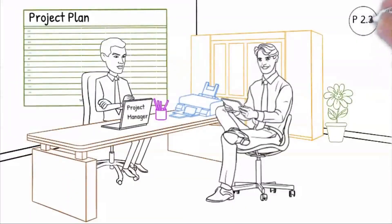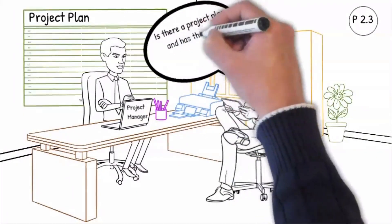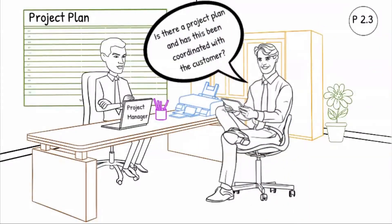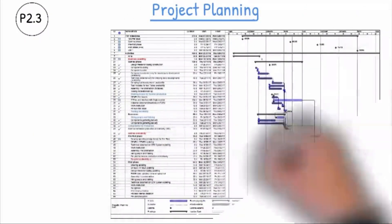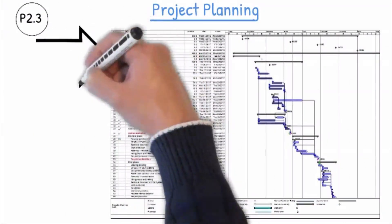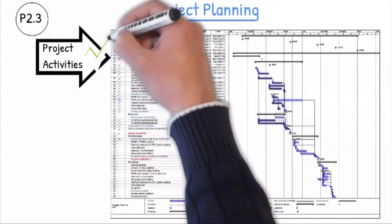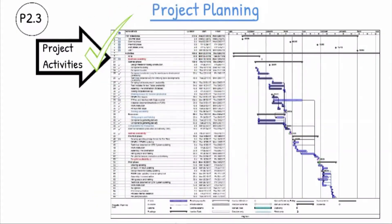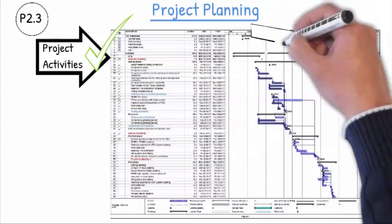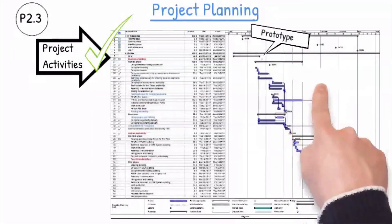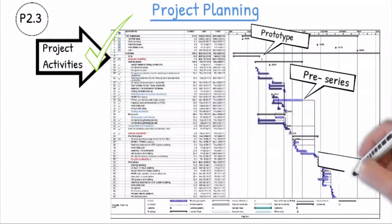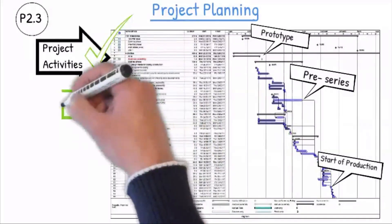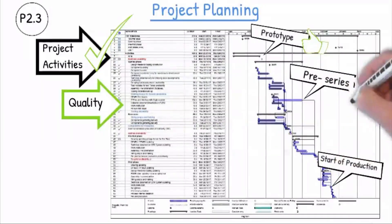Question P2.3: Is there a project plan and has this been coordinated with the customer? The project plan meets the specific customer requirements. All defined milestones are fully incorporated in the project plan according to the customer development and production build phases and the internal realization phases. A review is carried out at the milestones defined in the project plan to check that all planned activities are carried out and that the level of maturity required is achieved. The quality-related project activities must be part of the project plan.